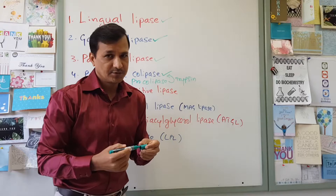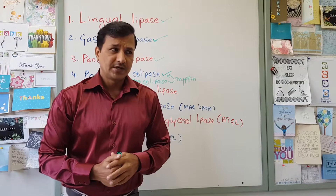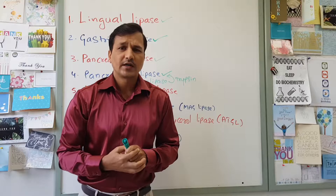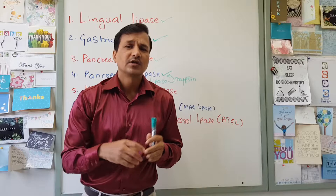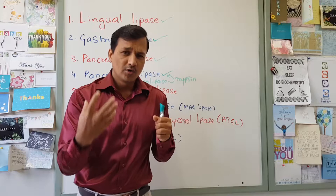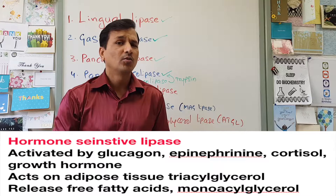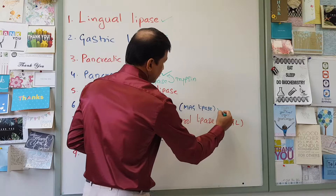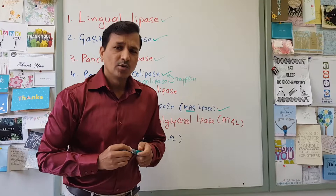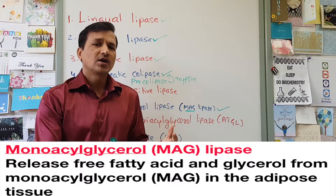Our next enzyme is hormone-sensitive lipase. Hormone-sensitive lipase is activated by glucagon and epinephrine, and it breaks down triacylglycerol present in adipose tissue into diacylglycerol, and then diacylglycerol into monoacylglycerol, releasing free fatty acids. When triacylglycerol is converted to monoacylglycerol, another lipase called monoacylglycerol lipase — written as MAG lipase — breaks down monoacylglycerol into glycerol plus free fatty acid.